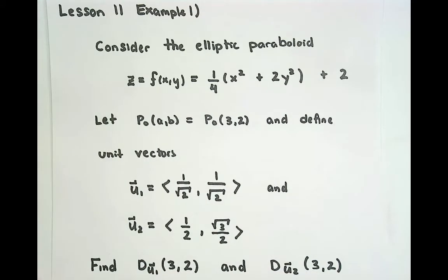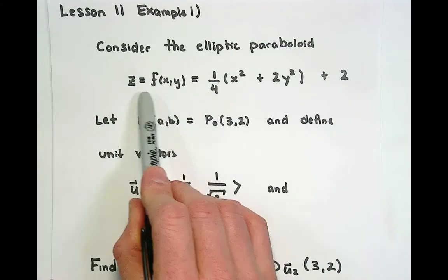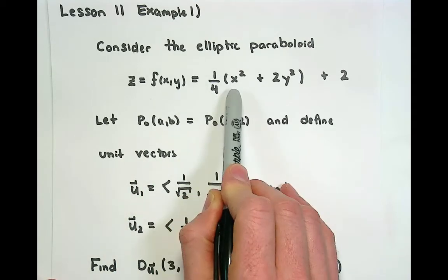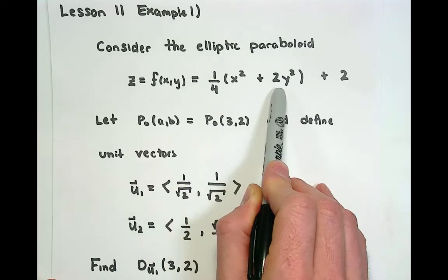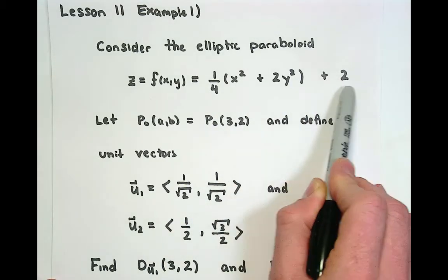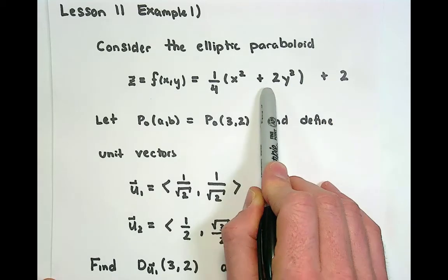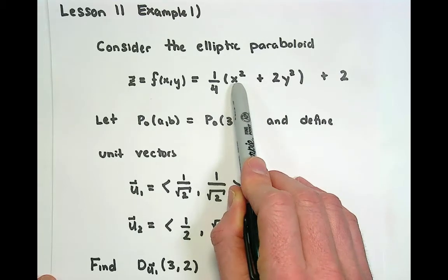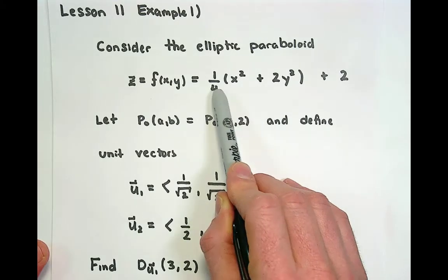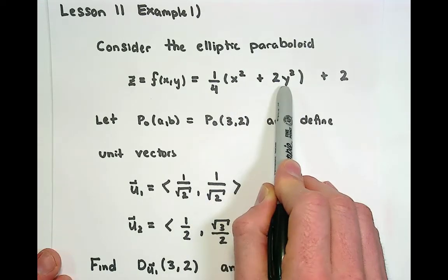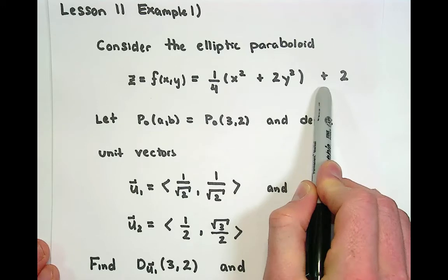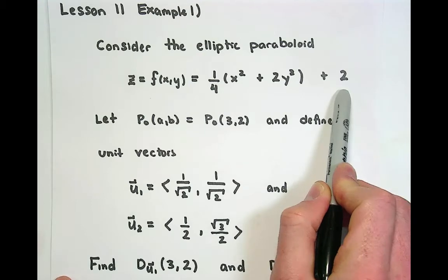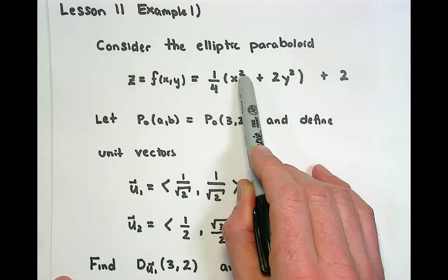Consider the elliptical paraboloid defined by the equation z equals f of x, y, which is given by one-fourth times the sum x squared plus 2y squared, and then we add 2 to it. This is an elliptical paraboloid pointing upwards. It has an x semi-axis of length 2 and a y semi-axis of length square root of 2, and the vertex happens at the point (0, 0, 2), which is a global minimum.